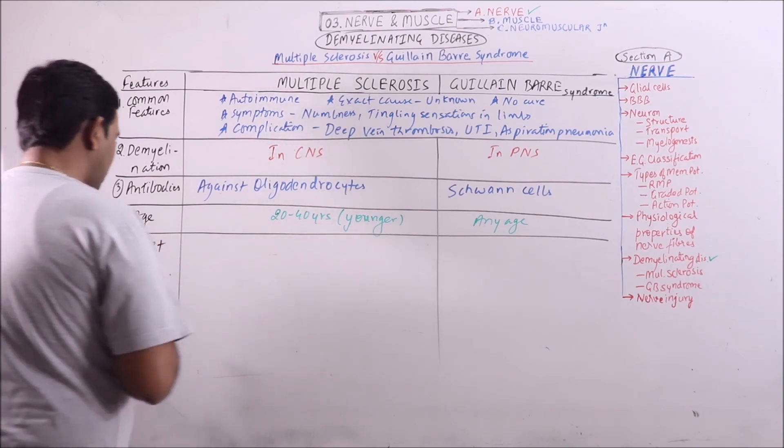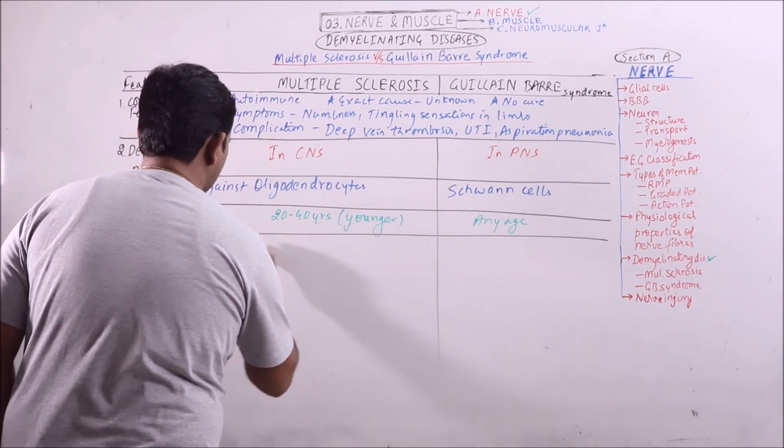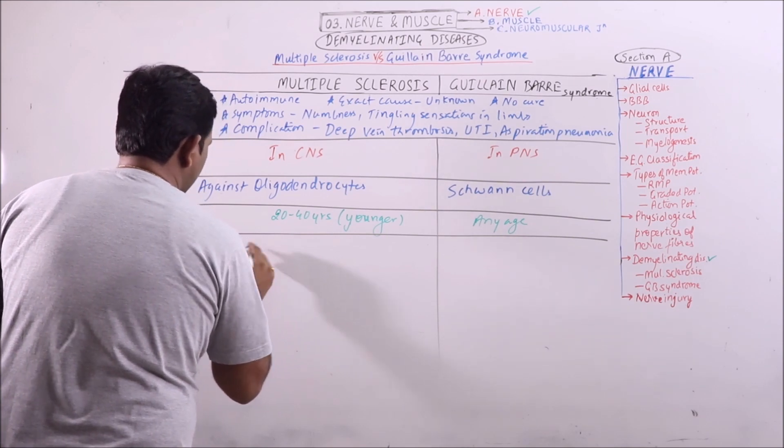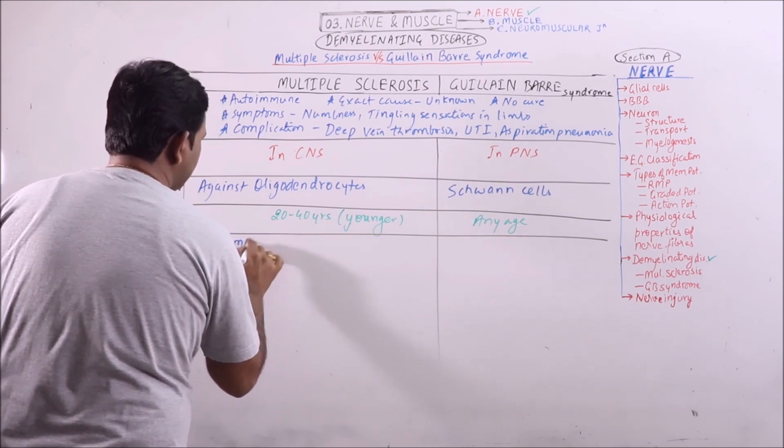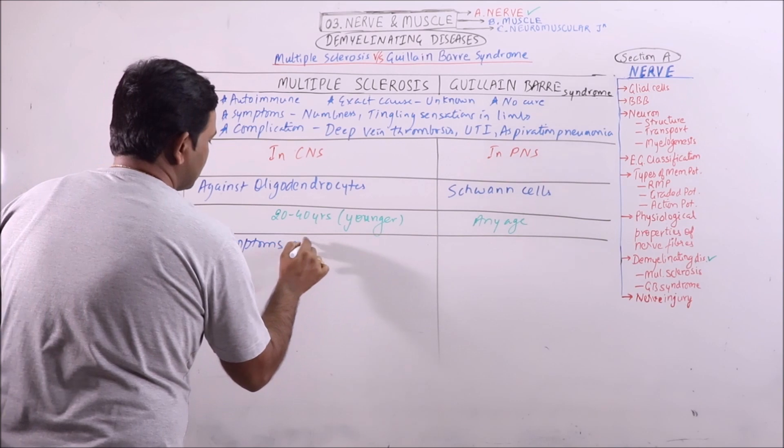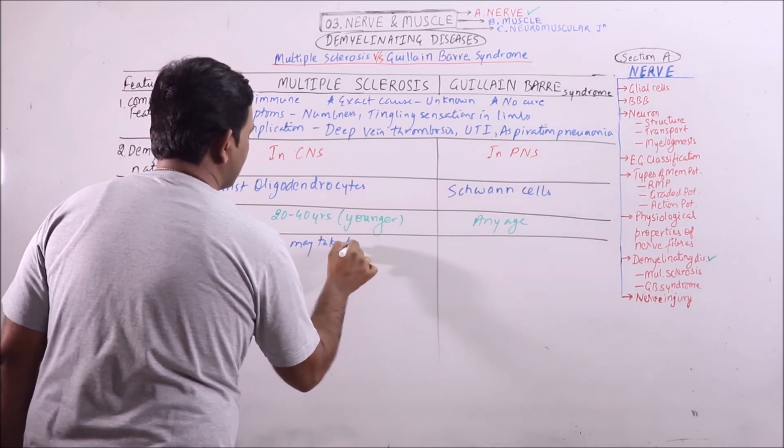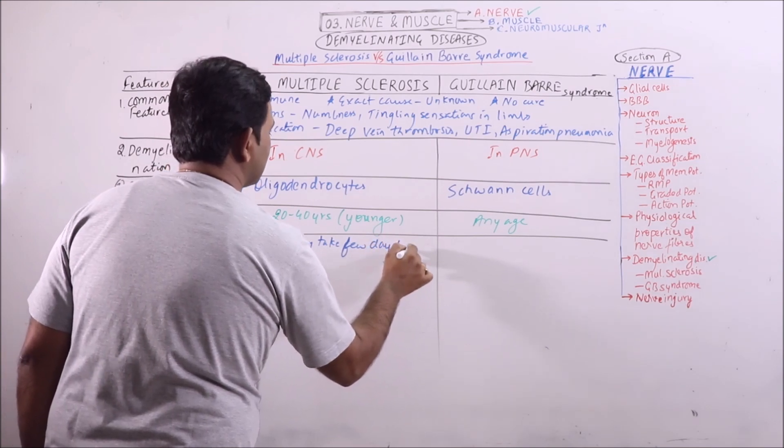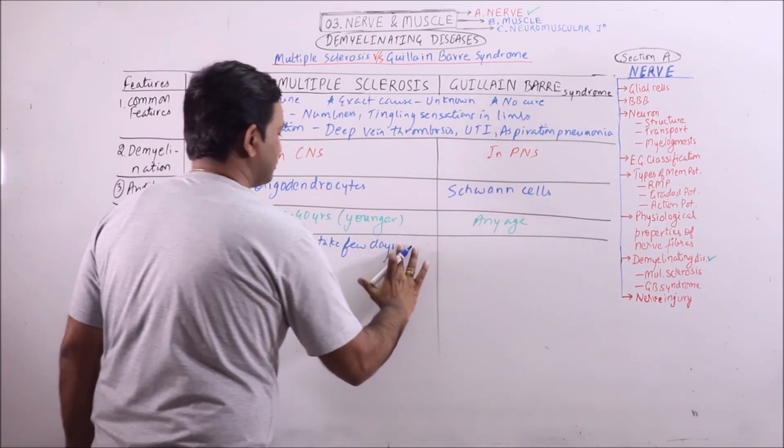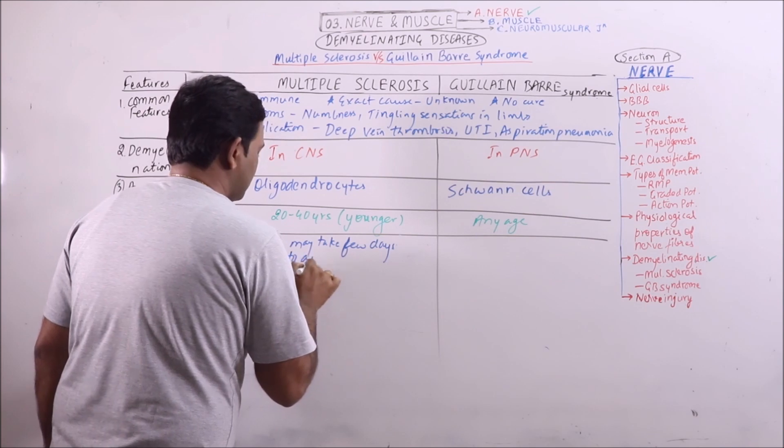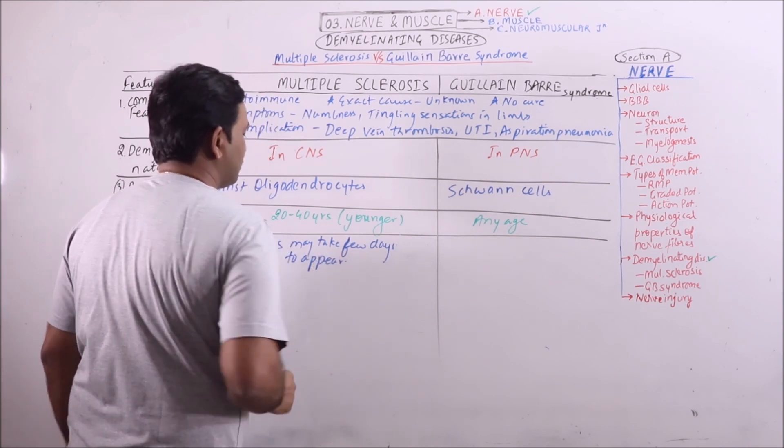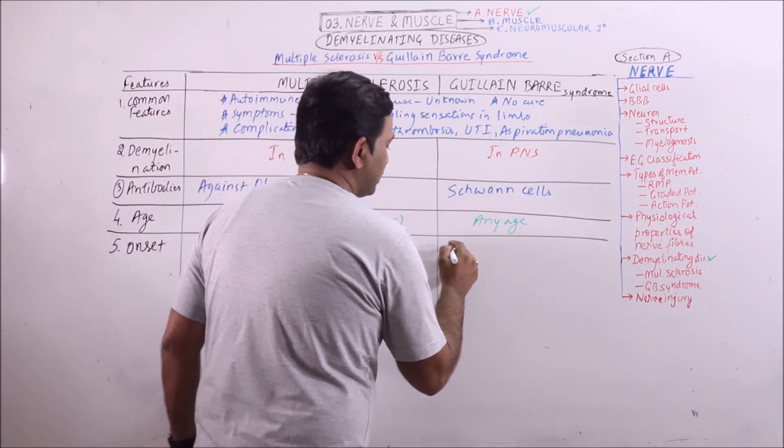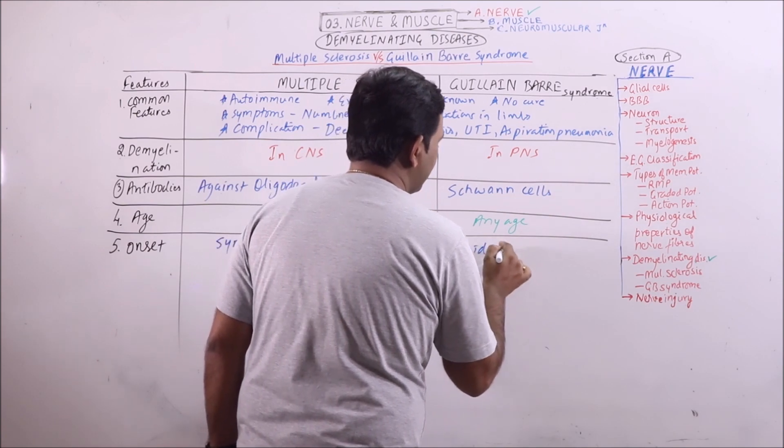Onset - onset is a little bit slower, that is symptoms may take few days to appear. It is relatively having rapid onset.